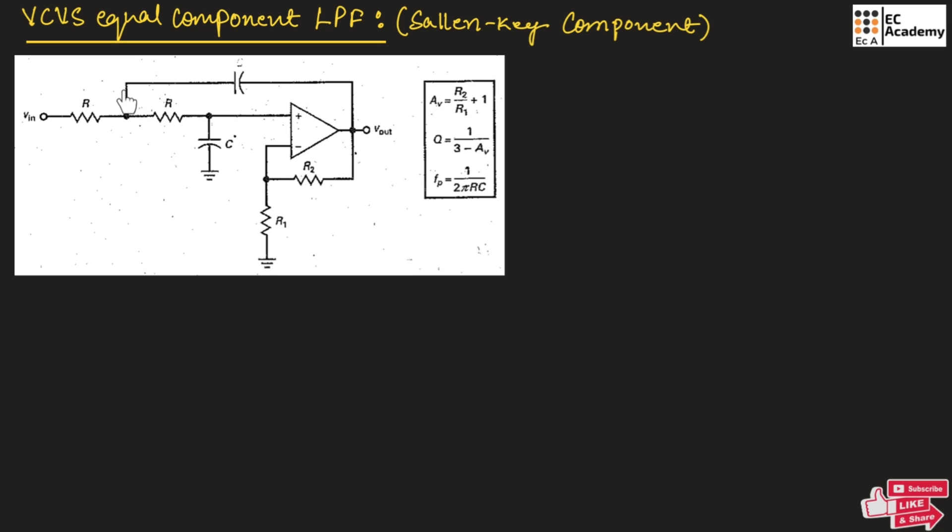The operation of this circuit is same as VCVS unity gain low pass filter, which we have discussed in our previous video. The only difference is we are having same capacitor value. Resistor values are same and capacitor values are different.